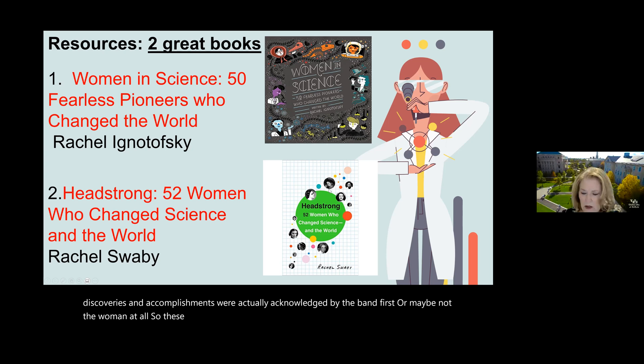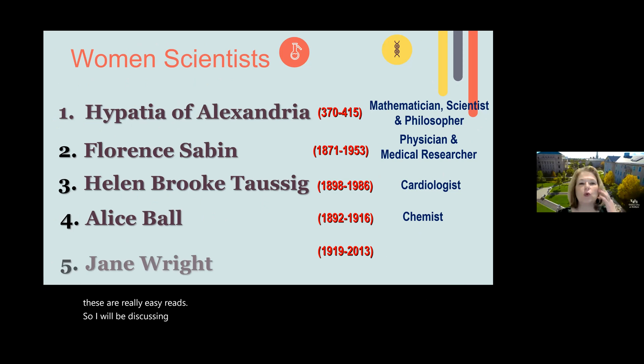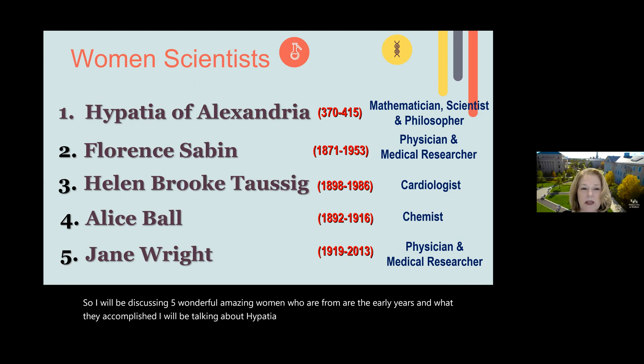What's really nice about these two books is that each woman is covered in about three pages, highlighting where they came from and what they accomplished — whether an invention, a new discovery, or something in the medical field. They also describe the disparities, where discoveries and accomplishments were often acknowledged by men first, or sometimes not the woman at all. I'll be discussing five amazing women from the early years: Hypatia of Alexandria, Florence Sabin, Helen Brooke Taussig, Alice Ball, and Jane Wright.